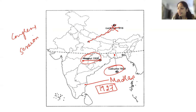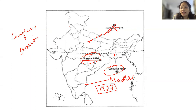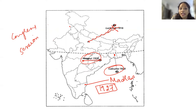Then you have the Lahore session, where the demand of Purna Swaraj was made — they declared that from the next year they will be celebrating Independence Day. That is 1929, and the place is Lahore.